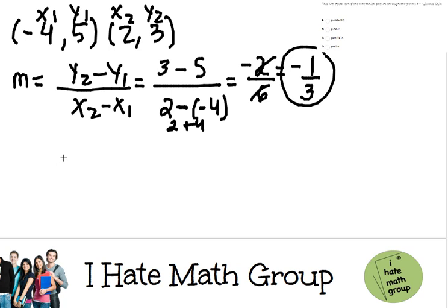Now that I have my slope, I can go ahead and find the equation of the line by using any point. Well, I'm gonna choose the easiest one, the one that does not have negative signs.